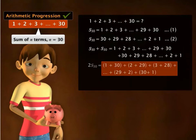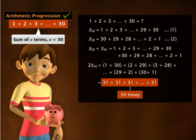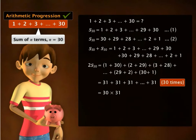On the right hand side we get the sum as 31 plus 31 plus 31 and so on plus 31, 30 times. Therefore, we can write the sum s 30 equals 30 times 31 over 2, which is equal to 465.